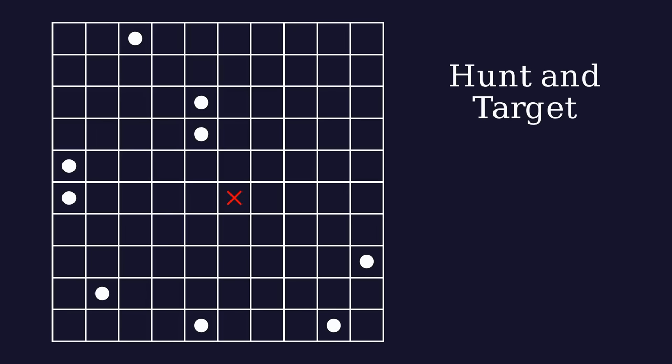you know that one of the 4 squares around your hit also contains that ship. After another hit, you already know if the ship is placed horizontally or vertically. Keep shooting until you sink the ship.